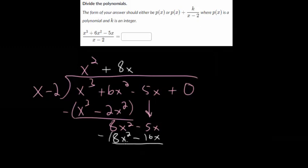And we again are subtracting to find that remainder. So the first terms cancel as expected, we have minus 5x minus negative 16x or plus 16x. So that gives us 11x.